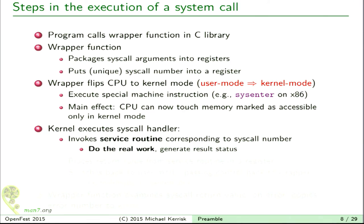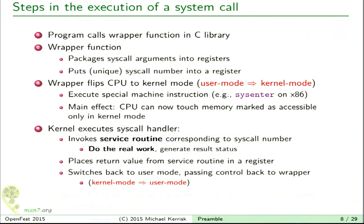Once the kernel has control, it executes something called the system call handler. The system call handler then calls the system call service routine — a piece of code in the kernel. For each different system call number, there's a different service routine that does whatever the system call is supposed to do. Eventually the system call handler finishes, puts a return value into a register to indicate success or failure, and then executes a machine language instruction that flips us back into user mode.